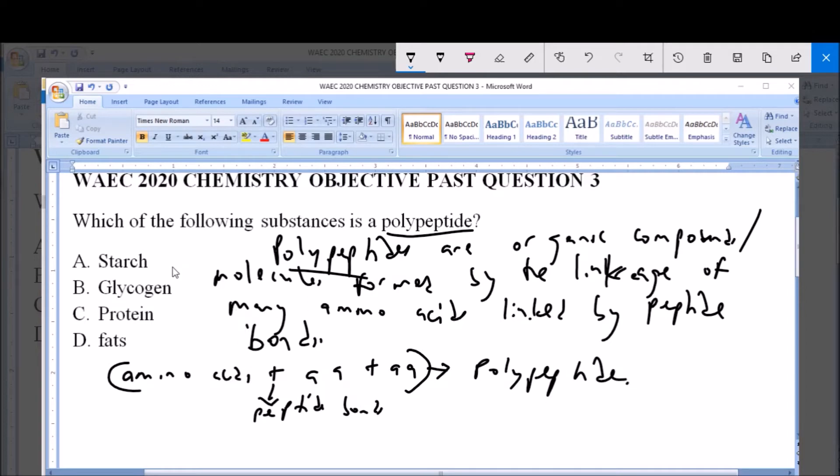Now starch, which is option A, is what is known as a polysaccharide. And polysaccharides are basically under carbohydrates where you have many sugar molecules linked together by glycosidic bonds.